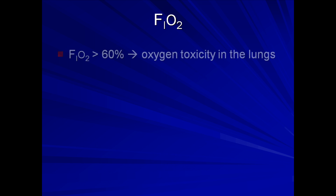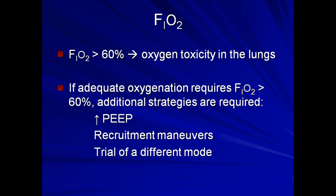There is a long-standing theory that FiO2s greater than 60% lead to oxygen toxicity in the lungs. Therefore, if adequate oxygenation requires FiO2 above 60%, additional strategies should be employed such as increasing PEEP, performing recruitment maneuvers, or a trial of a different mode. Patients in whom these additional strategies are not sufficient are occasionally said to have refractory hypoxia. At this point, they may be candidates for extreme measures, particularly at an academic institution, such as prone ventilation or ECMO. These will be discussed in a future lecture.